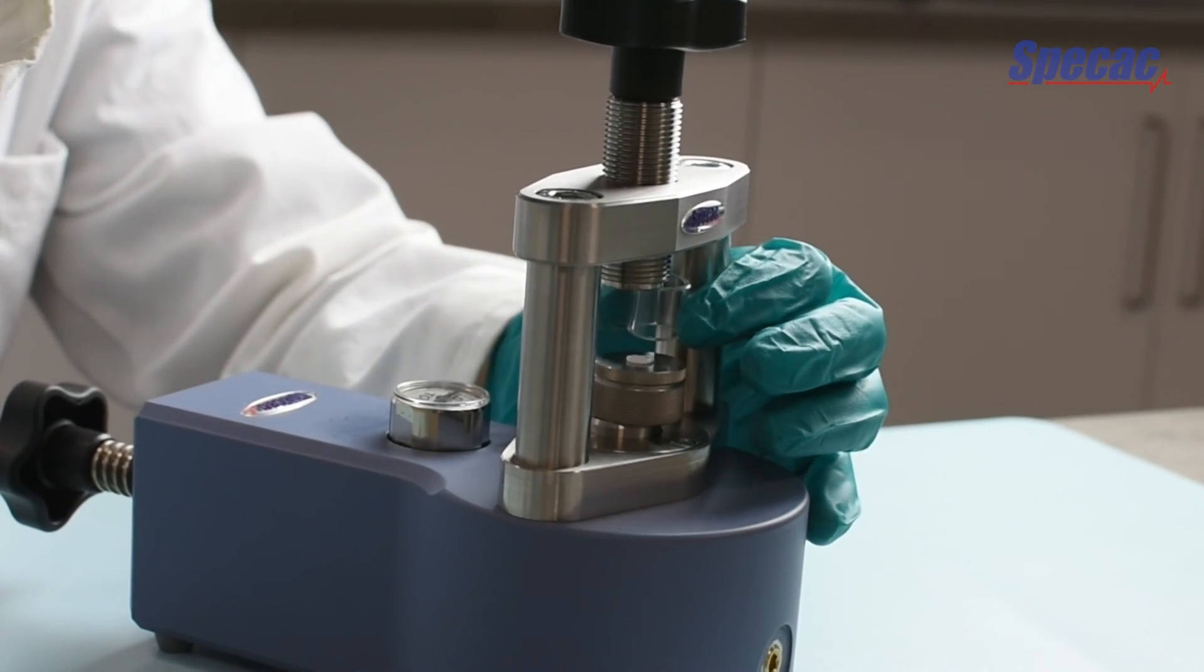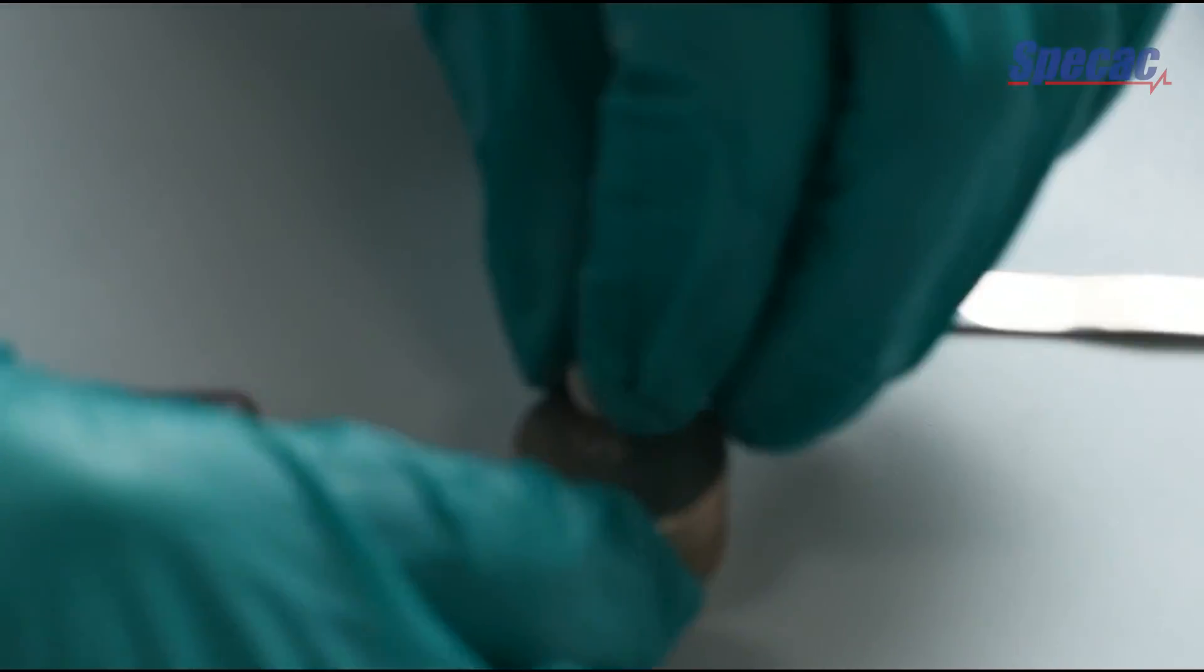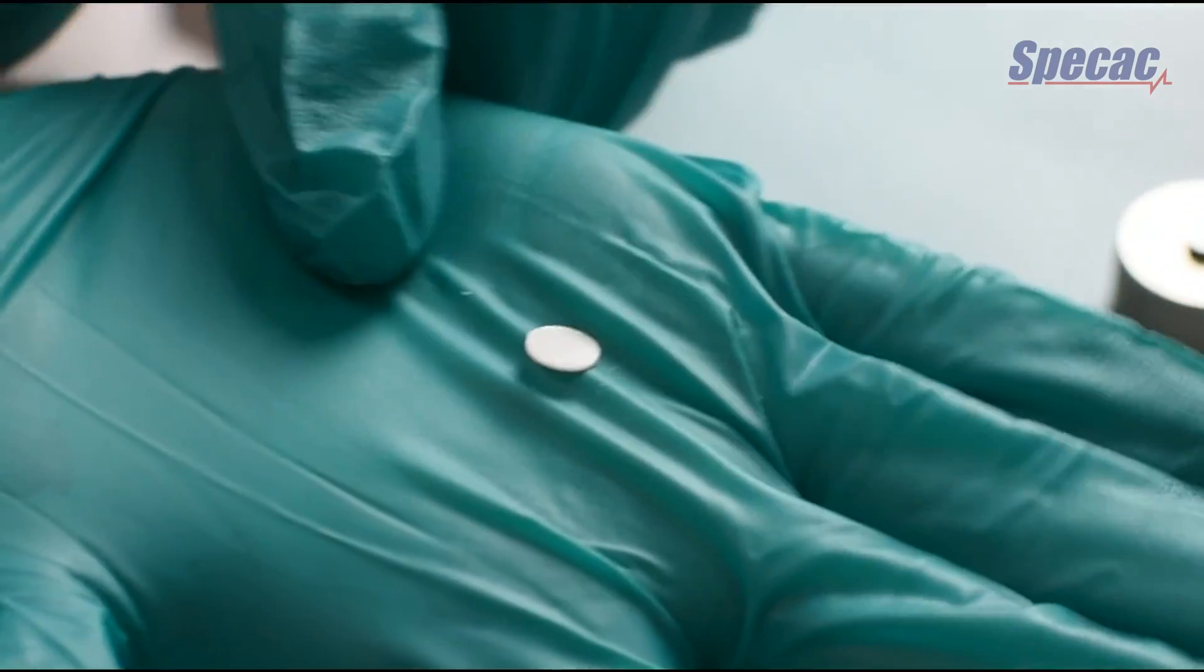The intact KBR pellets can now be saved or used for any further purpose and the ring die holder and anvil parts can be cleaned ready to be used again for the next KBR sample pressing.